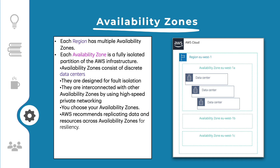Each AWS region has multiple isolated locations known as availability zones. Each availability zone provides the ability to operate applications and databases that are more highly available, fault tolerant, and scalable than would be possible with a single data center. Each availability zone can include multiple data centers.